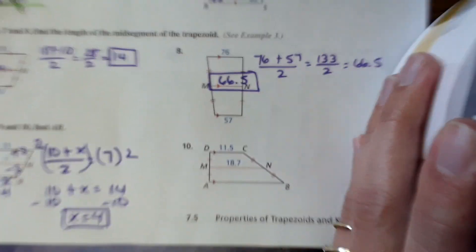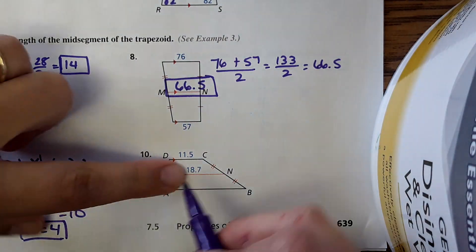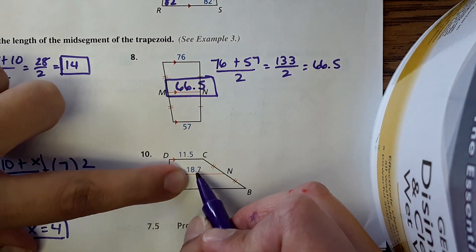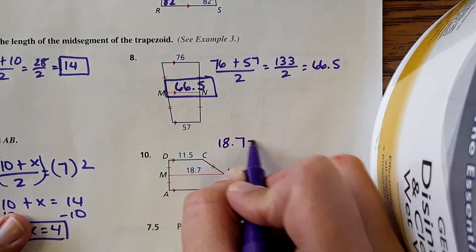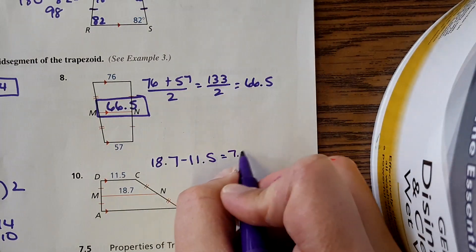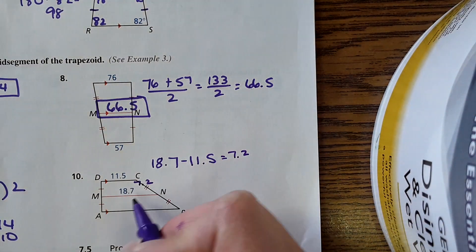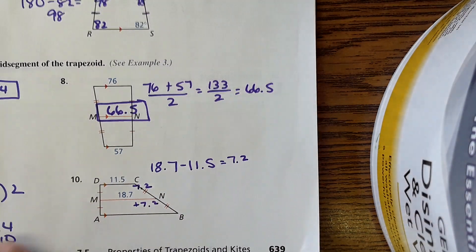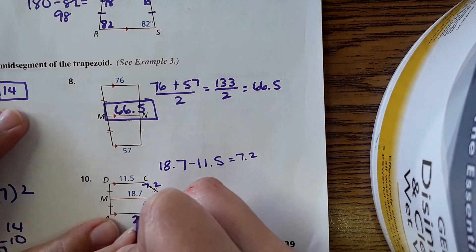Number 10. This one again, you could use the equation, or you could just subtract these to find the difference and then just add that to get this guy. So 18.7 minus 11.5 equals 7.2, so there's a difference of 7.2 here. So if I add 7.2 to 18.7, I'll get the longer side, and yeah, 25.9.